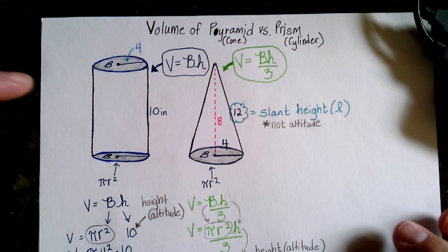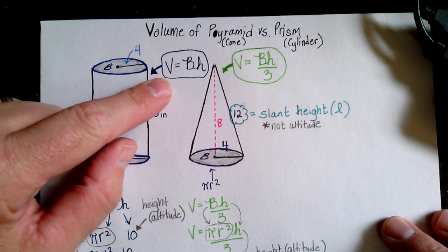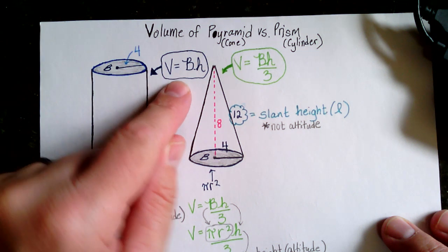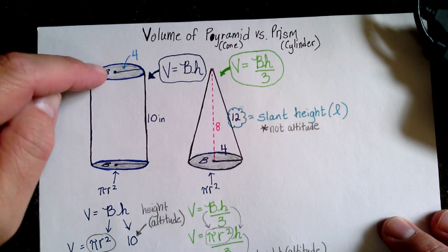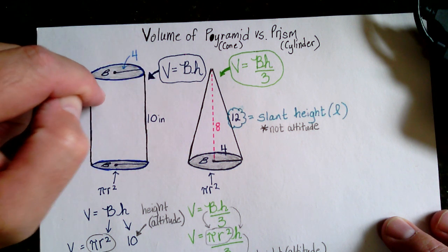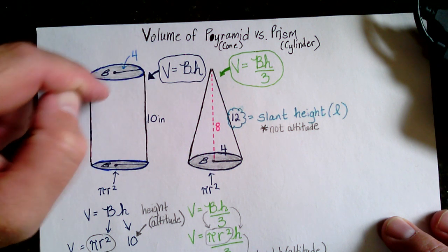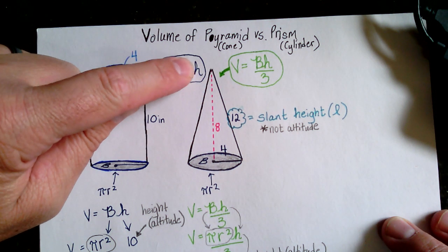So if you look here, the volume of a prism is the same no matter what, if it has two bases. In other words, here's a base, here's a base, there are two bases. To find the volume of any solid shape that has two bases, you're going to multiply the area of the base times the height.